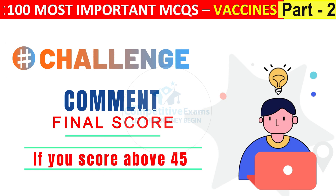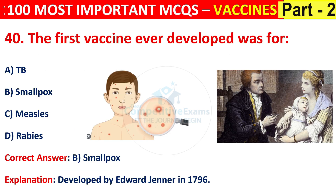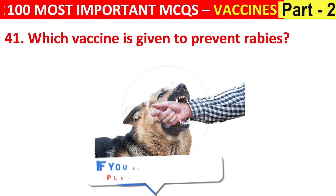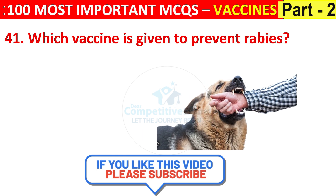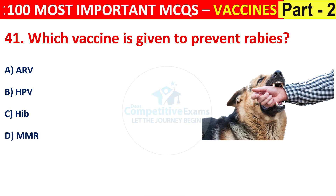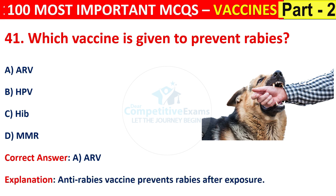If you score above 45, then you are ready for any nursing competitive exam. Question number 41: which vaccine is given to prevent rabies? The correct answer is A, that is ARV — anti-rabies vaccine — which prevents rabies after exposure.